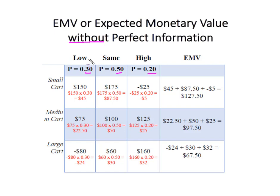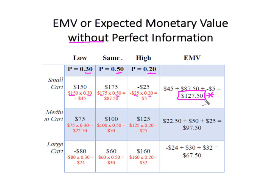I have my probabilities associated with my three states of nature: 30% chance tourist traffic is lower, 50% that it's the same, 20% that it's higher. I'm going to weigh each of my payoffs by the probability of that payoff, simply multiplying these together and then summing them. That sum of the weighted payoffs gives me my EMV for each alternative, and in order to find my EVPI, I've got to select the decision alternative with the highest expected monetary value, considering that I have no information about the future.